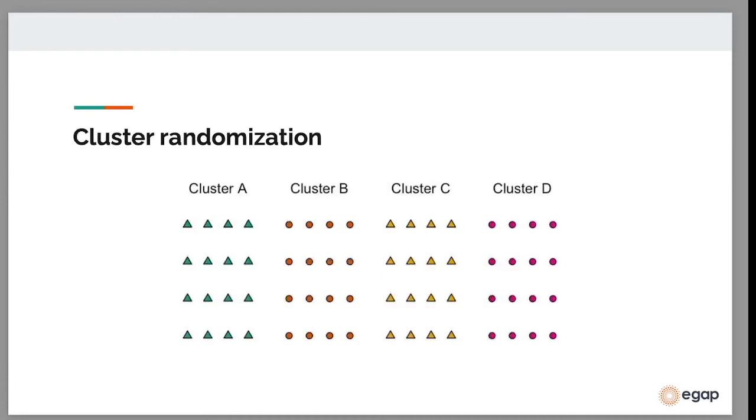With cluster randomization, we do the randomization at the group level. And that group is now called a cluster. So all the individuals in the group are assigned to the same treatment condition. You can see that in each group, all the units are either triangles or they're all circles.